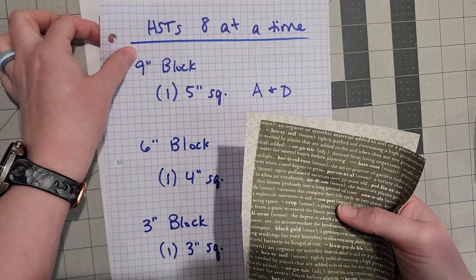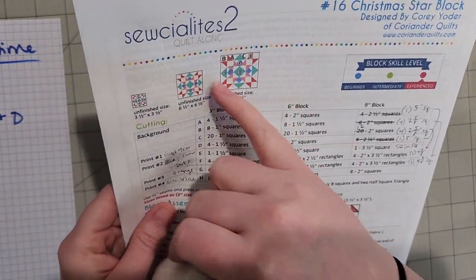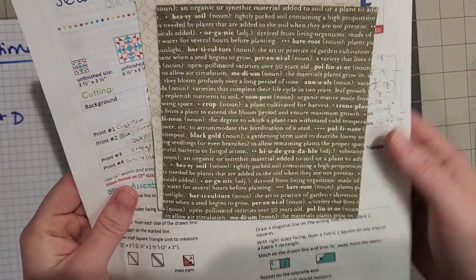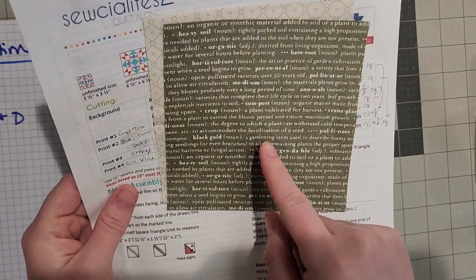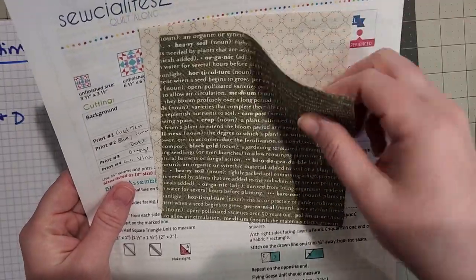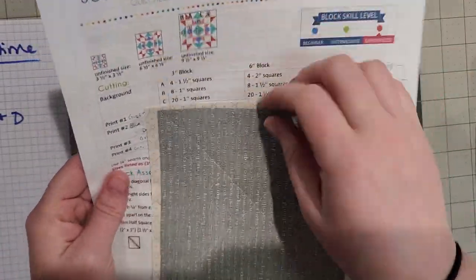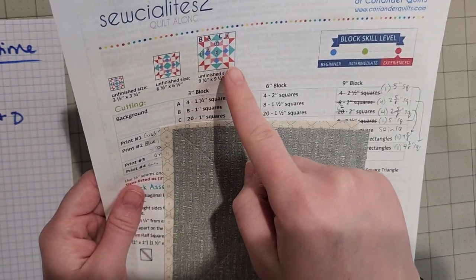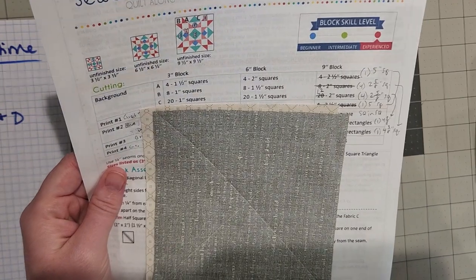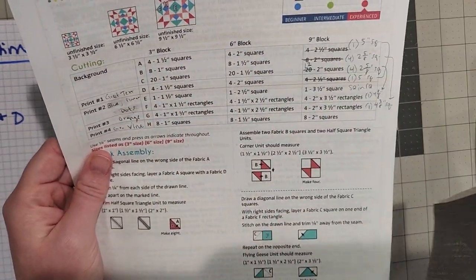Another reason I love doing eight at a time HSTs especially in a block like this when a block has radial symmetry around the center is you can use a directional fabric with the eight at a time method. You can see I've got this one with text and without even trying no matter how I put these together I'm gonna get eight HSTs that perfectly fit in all these spots so that I can have my text running the same direction on all those pieces. You'll see that in the finished block.